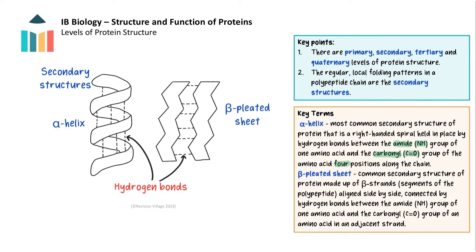The other common type of secondary structure is the beta-pleated sheet. The beta-pleated sheet is made up of beta strands, which are segments of the polypeptide chain aligned side by side, forming a sheet-like structure. The beta strands are typically 3 to 10 amino acids in length, and the strands are connected by hydrogen bonds between the amide group of one amino acid and the carbonyl group of an amino acid in an adjacent strand.